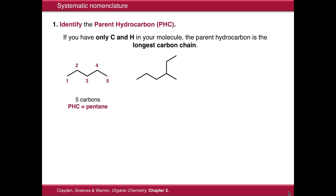If we move to a branched example here, we can number it the same way — one, two, three, four, five — but now we've got a substituent hanging off the side which would give us a longer carbon chain. So actually we need to number it five, six. Our longest carbon chain is six carbons long, therefore our parent hydrocarbon is hexane.